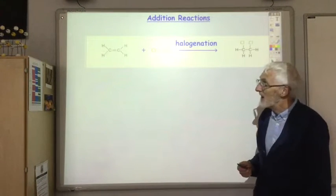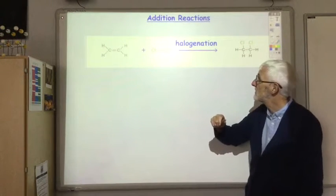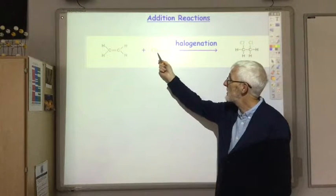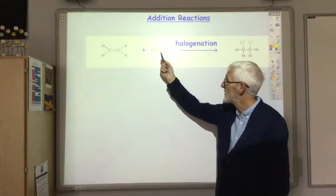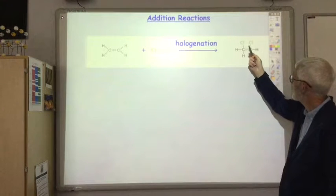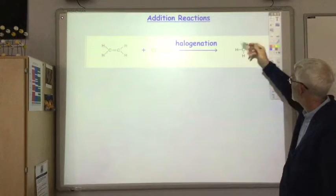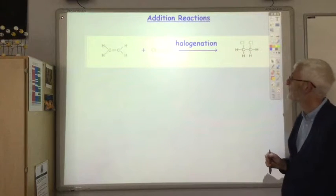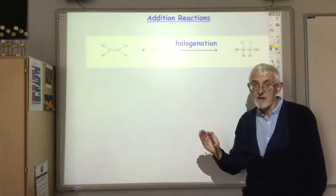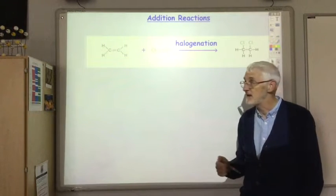We have different names to the different addition reactions depending on what molecule we're adding to it. If we add a halogen it's called halogenation. In this case we're adding the chlorine Cl2 molecule. The carbon-carbon double bond breaks and one chlorine goes onto each carbon atom. This is called a dihaloalkane. In this example I've used chlorine, but we could also use the other halogens: fluorine, bromine, or iodine.